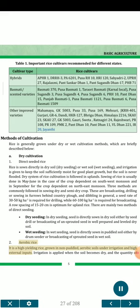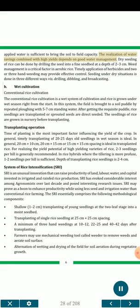Aerobic rice is a high-yielding rice grown in non-puddled, aerobic soils under irrigation and high external inputs. Irrigation is applied when the soil becomes dry, and the quantity of applied water is sufficient to bring the soil to field capacity. The realization of water savings combined with high yields depends on good water management. Dry seeding of rice can be done by drilling the seed into a fine seedbed at a depth of 2 to 3 cm. Weed management is a critical factor in aerobic rice. Timely application of herbicides and 2 or 3 hand weedings may provide effective control. Seeding under dry situations is done in three different ways: drilling, dibbling, and broadcasting.